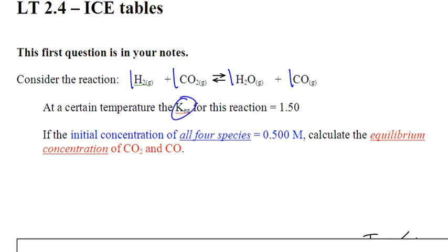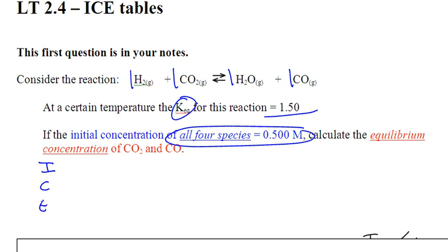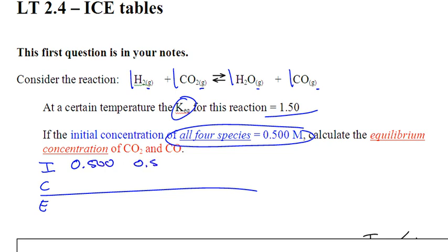The Keq is 1.5 — that's new; we're given the Keq. The question states in blue that the initial concentration of all four species is 0.500 M, and we need to find the equilibrium concentrations. We'll set up our ICE table. They are all gases, so we are going to include them all. If something was a liquid or a solid we would ignore it. The initial concentration is 0.500 for all four.